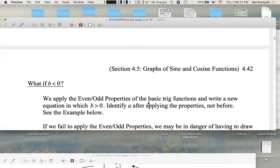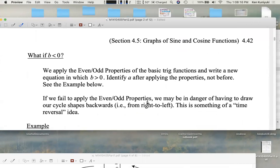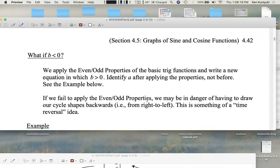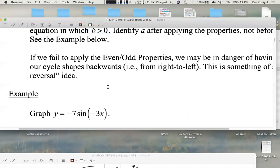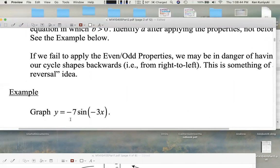What if b is negative? Then that's kind of weird. Then the idea is that we kind of graph backwards, and we want to avoid that. So if b is negative, let's go ahead and apply the even-odd properties. Because if b is negative, you're in a bad place, and you're going to want to fix that immediately so that the new value of b is positive. We want b to be positive when we start analyzing. So for example, let's graph a few cycles of y equals negative 7 sine of negative 3x.